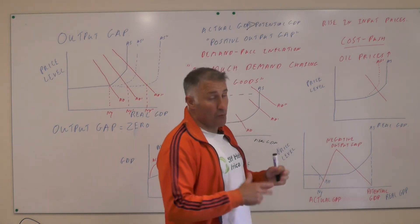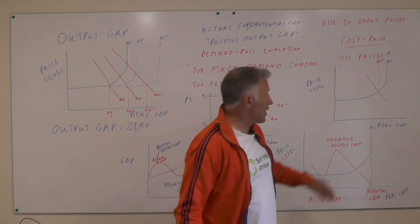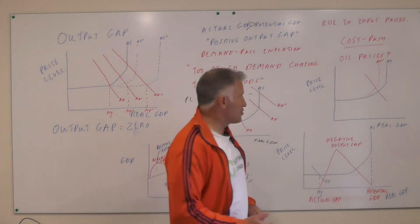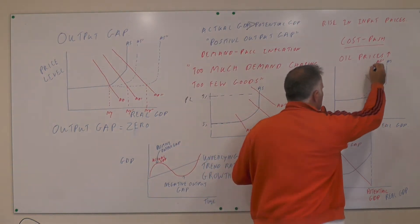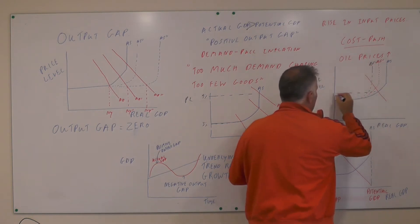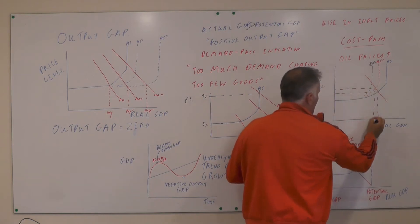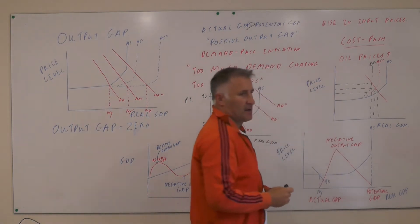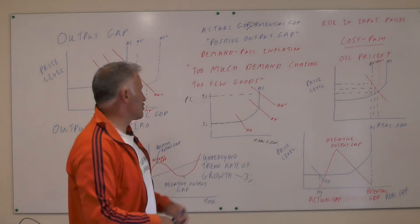There are different ways of dealing with demand pull inflation and also different ways of dealing with cost push inflation. Cost push inflation is pretty serious because the AS curve moves inwards — so if we start here, we move to there and then to there — ending up with higher inflation and lower national income. You don't want to get inflation, whether cost push or demand pull.